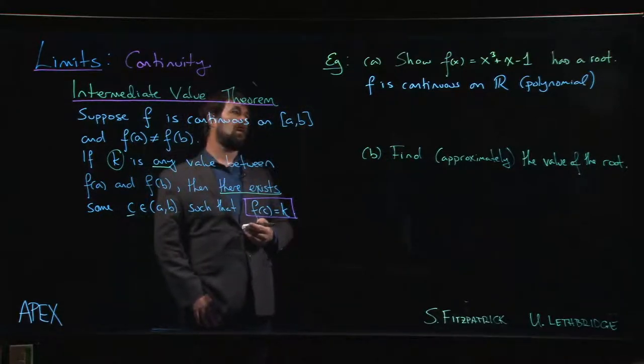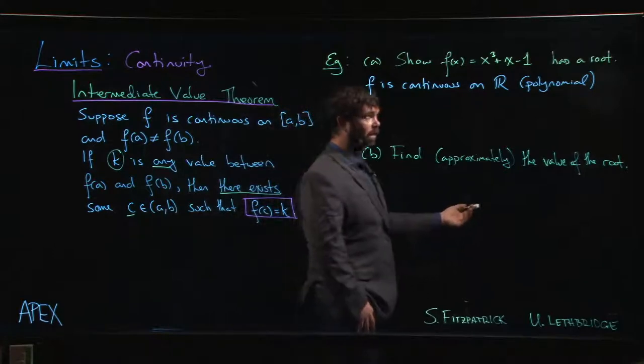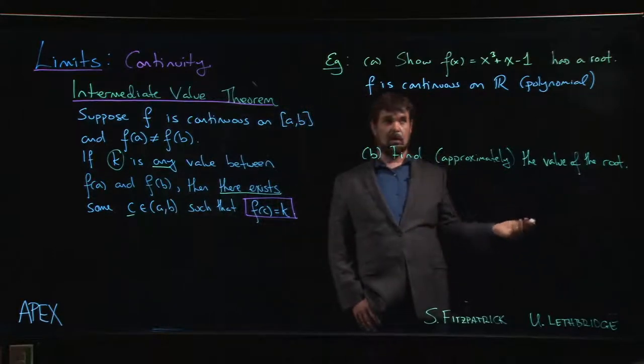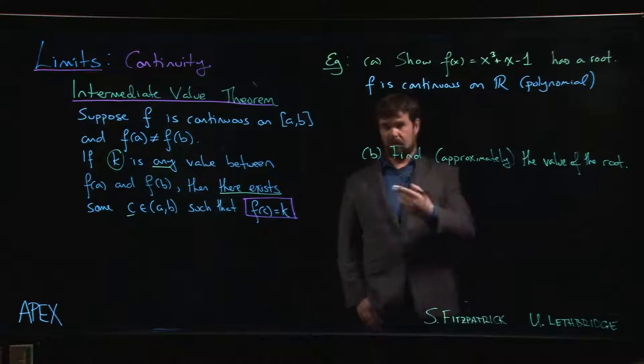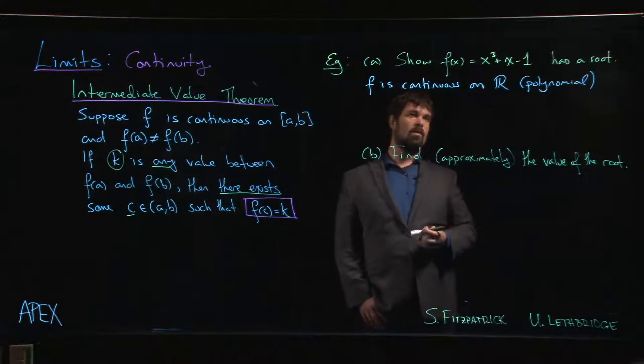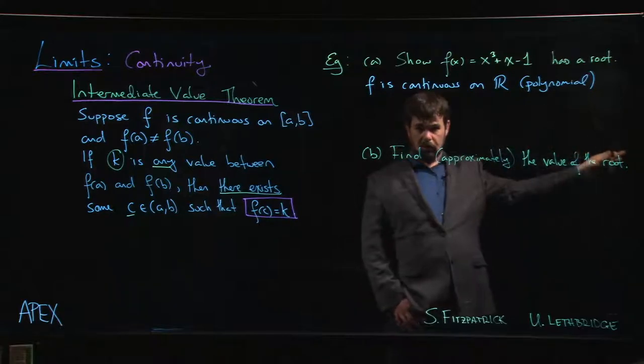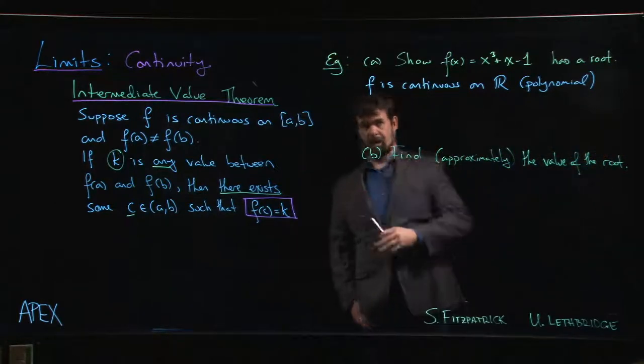We know that x cubed goes to plus infinity for x positive and large. We know that it goes to minus infinity when x goes to minus infinity. And so we know that it will be eventually positive in one direction, eventually negative in the other direction.